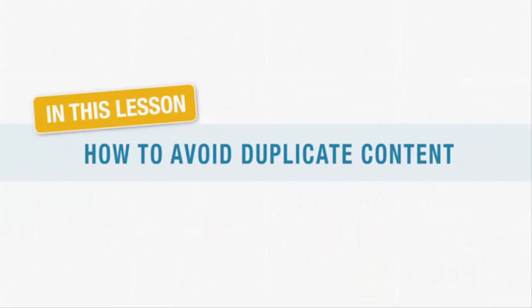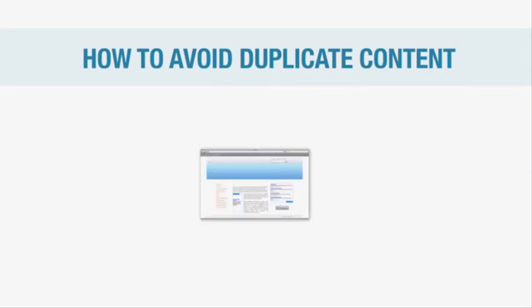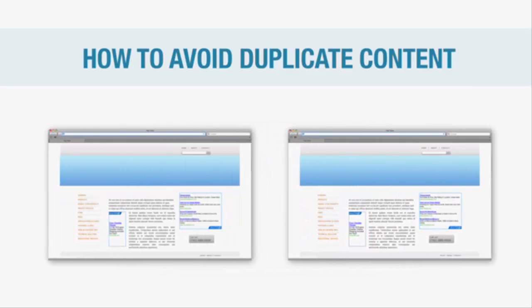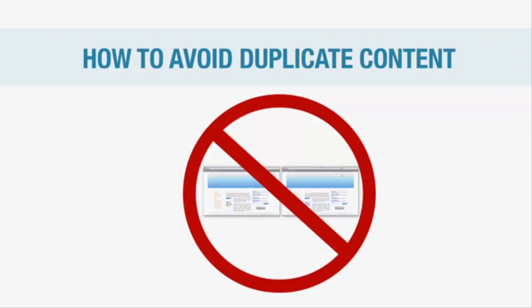What's thrown around a lot in internet marketing circles is duplicate content, or the duplicate content penalty. This is the idea that having content on your site that is significantly similar to existing content on the internet will cause your site to perform badly in the search engines, most notably Google. In this lesson we look at duplicate content and how to avoid it.